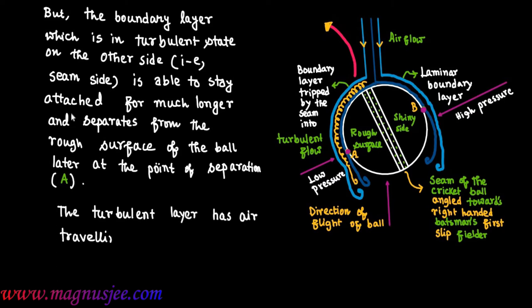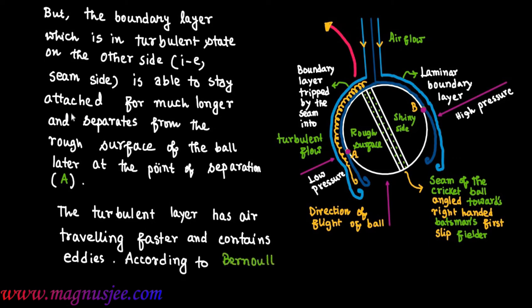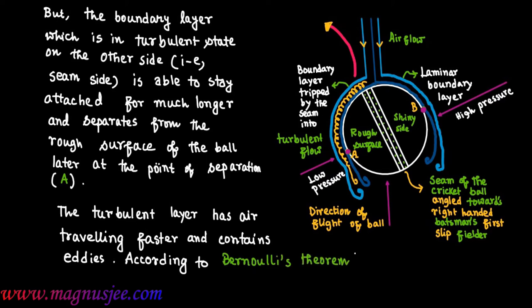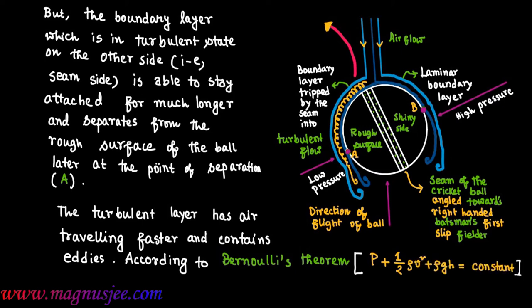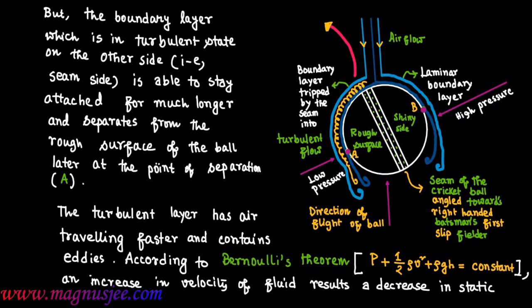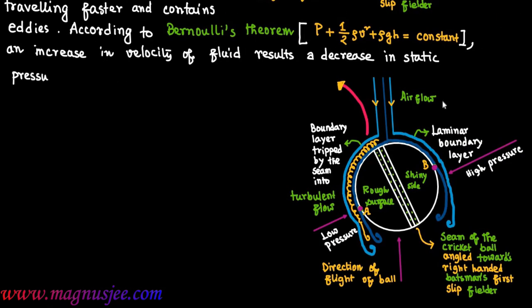The turbulent layer has air travelling faster along the seam side of the cricket ball and contains eddies. According to Bernoulli's theorem, the sum of pressure energy, kinetic energy, and potential energy per unit volume remains constant. An increase in velocity of fluid results in a decrease in static pressure.